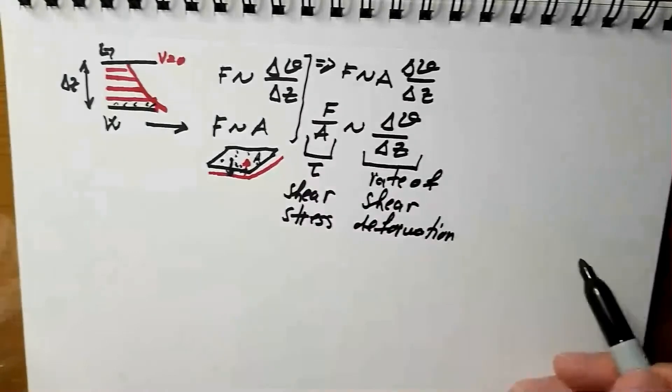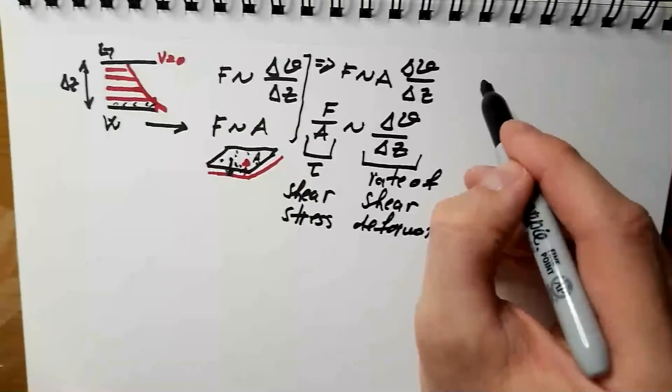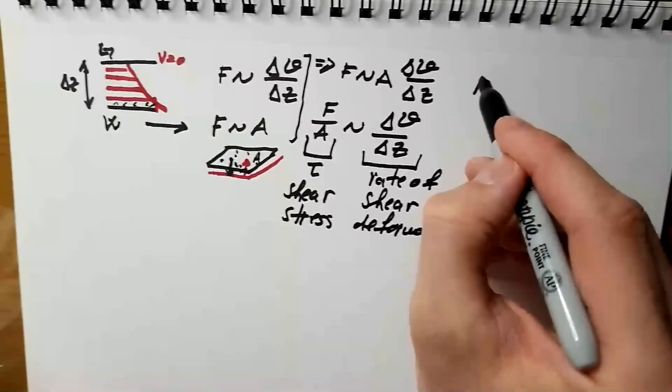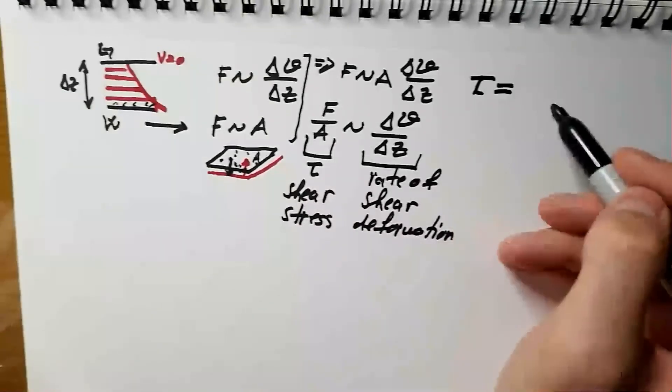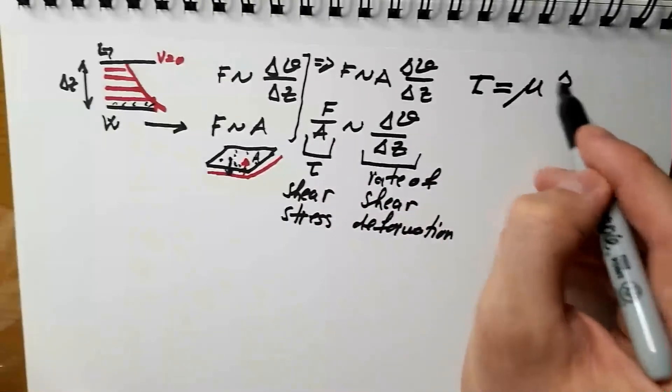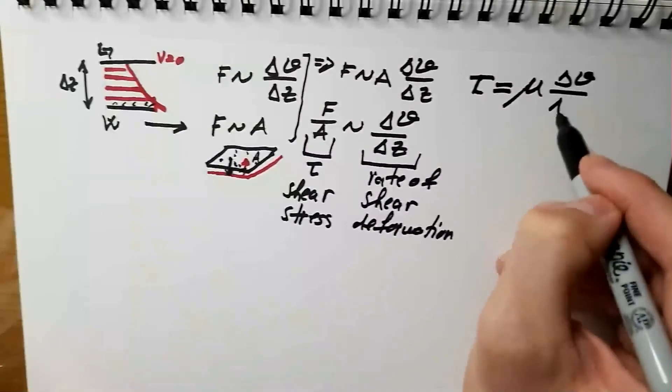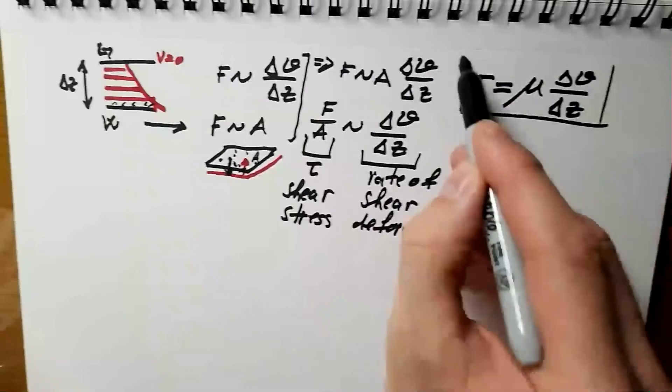And then, a great man, Isaac Newton, put final touches on this and said, Tau, or shear stress, is equal, instead of proportional to some proportionality constant, delta V over delta Z. And this over here is called Newton's law of viscosity.